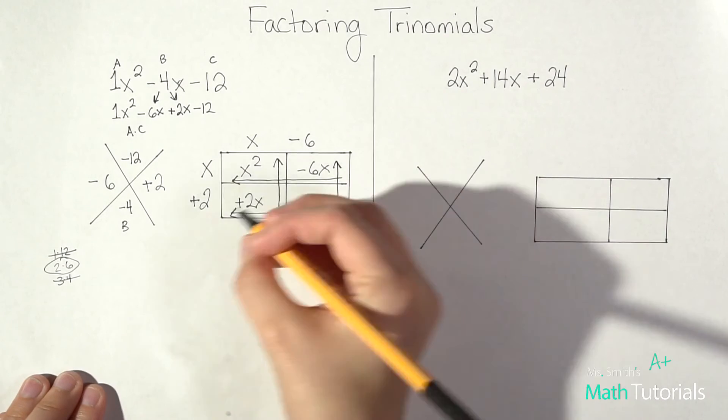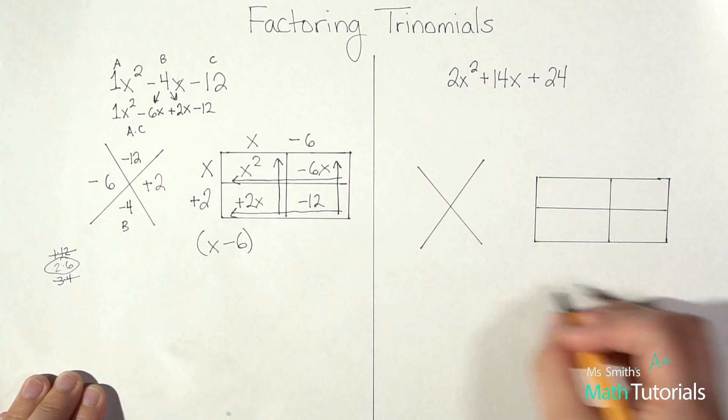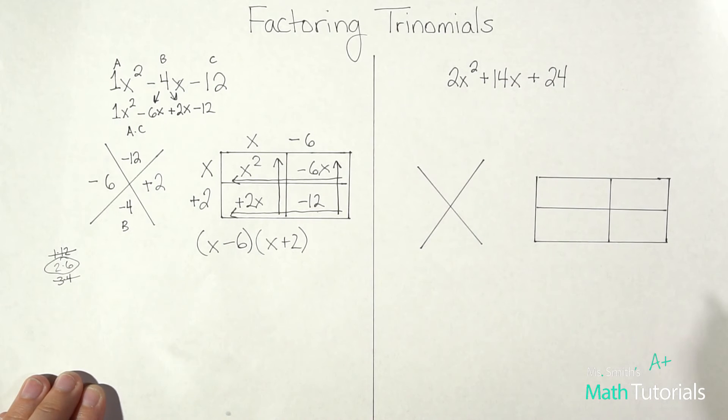And now I just write my answer. So I've got my top binomial, X minus 6, and my side binomial, X plus 2. That's it.